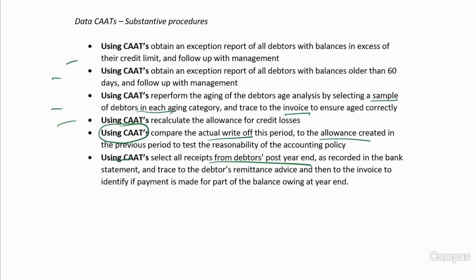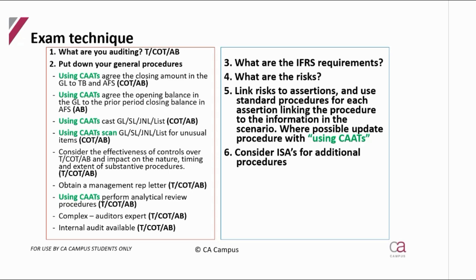They've also done subsequent receipts using CATS: you select your receipts from the bank statement post year-end and trace it back to the remittance to see if the invoice was raised by year-end and therefore they are settling. I've pulled out procedures using all the procedures under the valuation assertion, incorporated the use of CATS, and added a few other CATS-specific procedures.